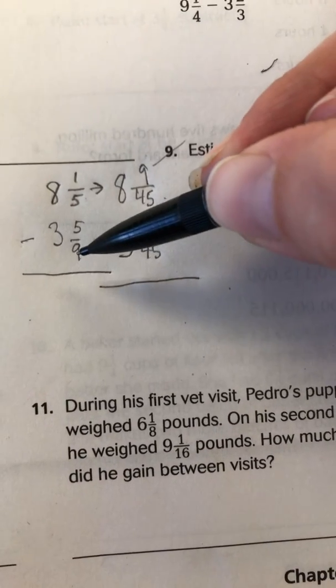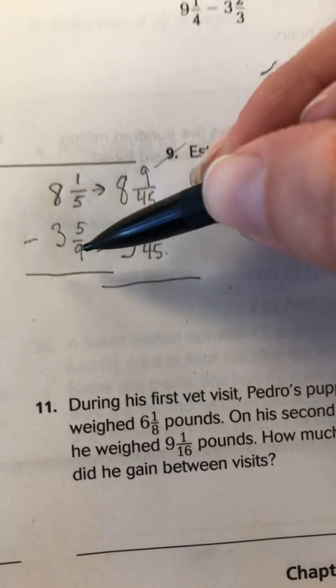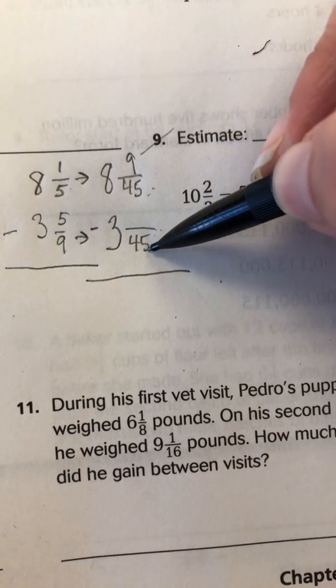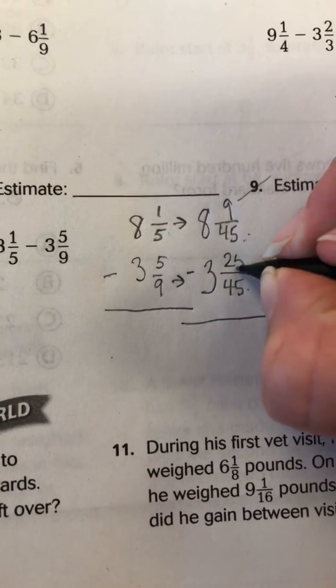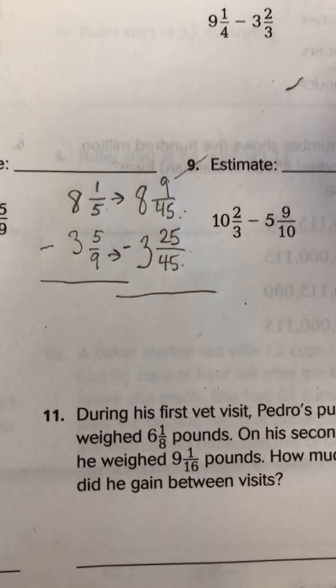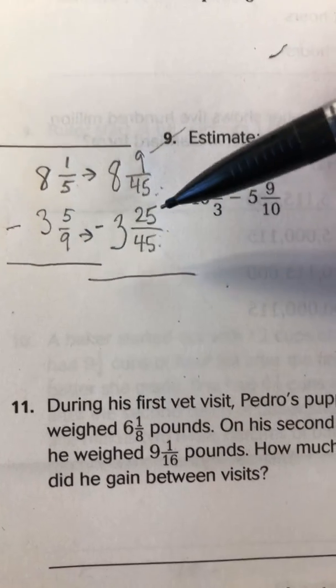Same thing down here. What did I multiply 9 by to get 45? I multiplied it by 5. So since 9 times 5 is 45, 5 times 5 is 25. So here are our two new fractions. 8 and 9/45 minus 3 and 25/45.